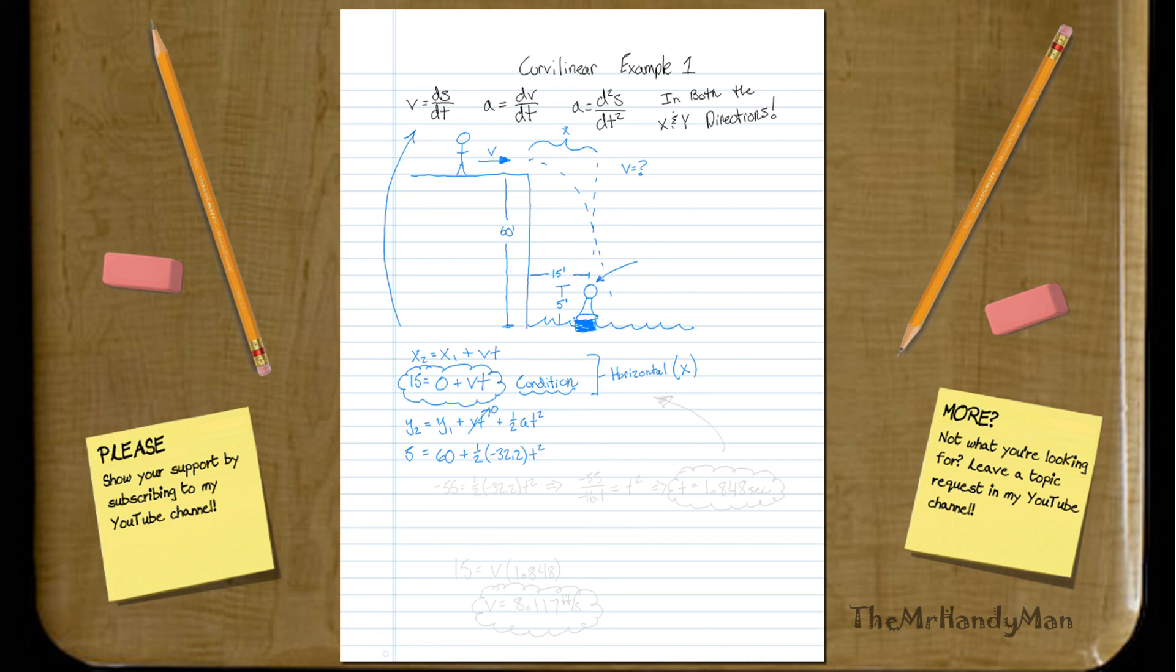And what you realize is that you'll have negative 55 equals one-half, negative 32.2, T squared, which, when you work that out, you get something along the line of negative 55 over negative 16.1 will equal T squared.